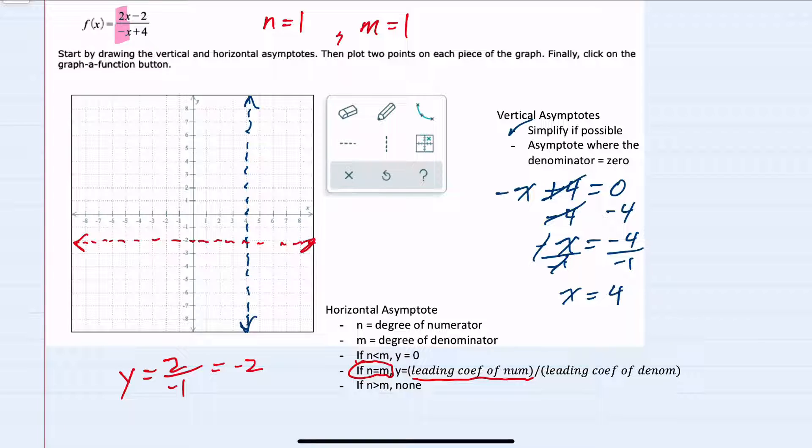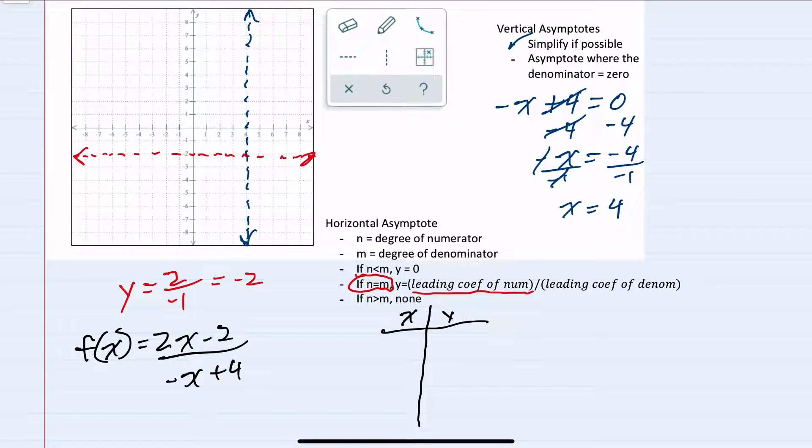And having found both asymptotes, I can now plot two points on each piece. And making a table, I'll start by plugging in a value to the left of that vertical asymptote. And 3 is to the left of the vertical asymptote, which goes through x equals 4.